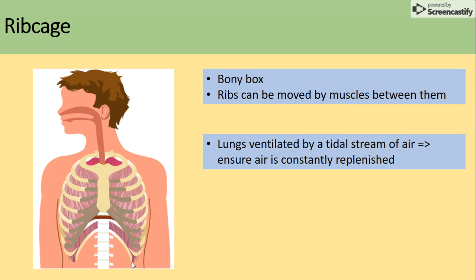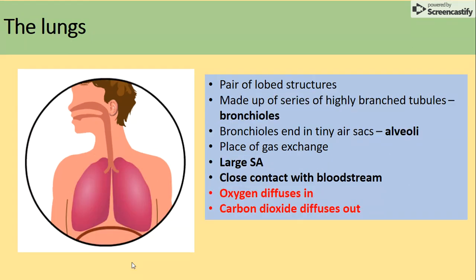The lungs — we've got a pair of them. They are made of highly branched tubules called bronchioles, which end in tiny sacs called alveoli. This is the place where gas exchange between the blood and alveoli takes place. There is a large surface area provided by many alveoli, and they are in close contact with the bloodstream, providing a short diffusion pathway.